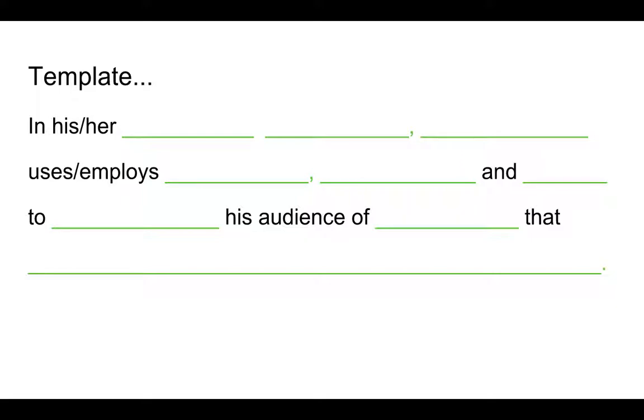So the first two blanks here are for the occasion portion of the SOAPSTone. And if you take a look at the sheet on the SOAPSTone analysis that I gave you in class, you will see that there are two items that make up the occasion: the first one is the time period, and the second one is the form of the writing. So if we're talking about Mike Rose's 'I Just Want to Be Average,' which we're going to discuss today, we put the year here.